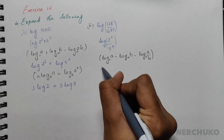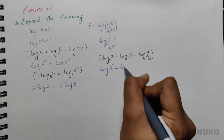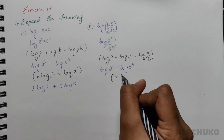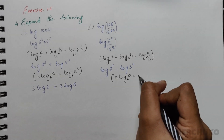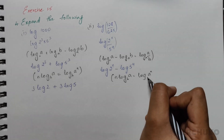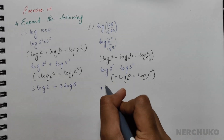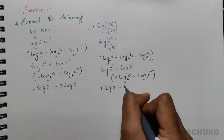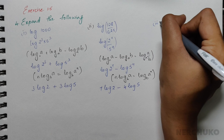Applying the formula, I get log(2⁷) minus log(5⁴). Then using n·log a = log(aⁿ), I would have 7·log 2 minus 4·log 5.